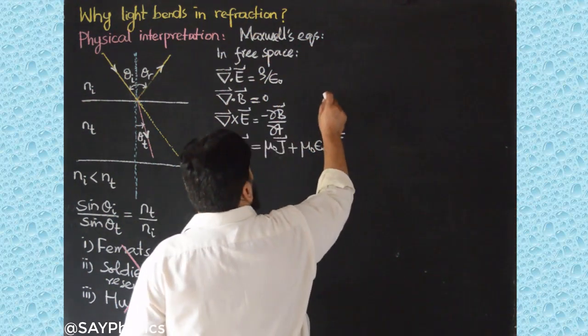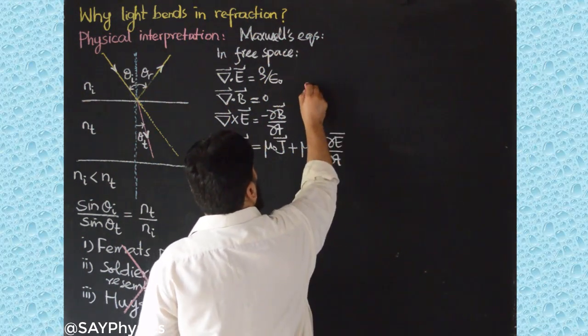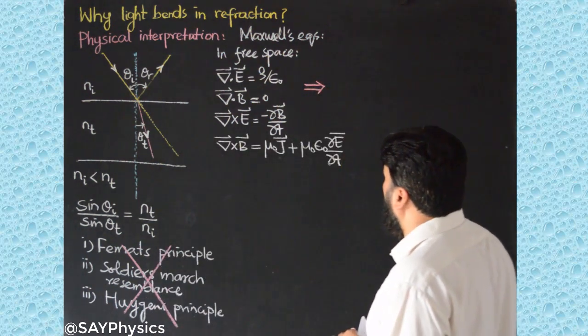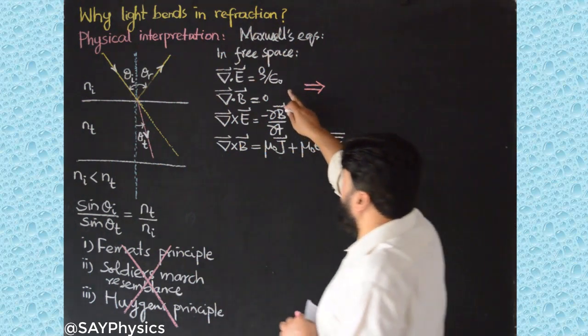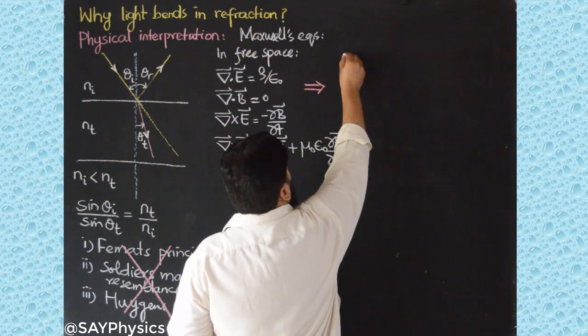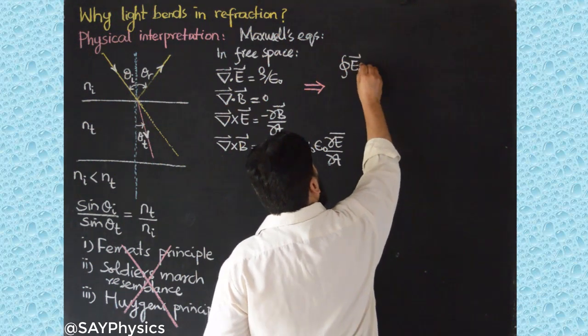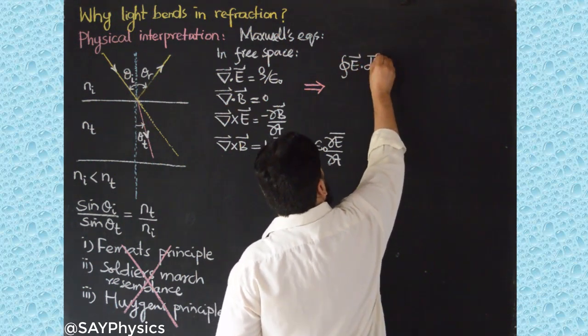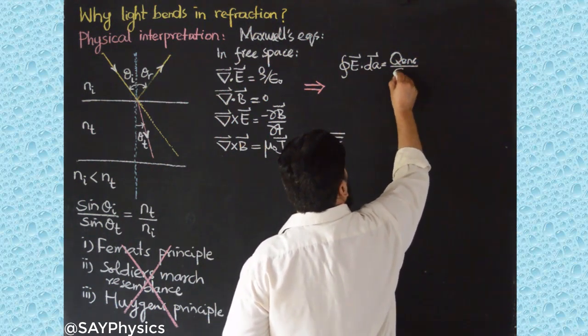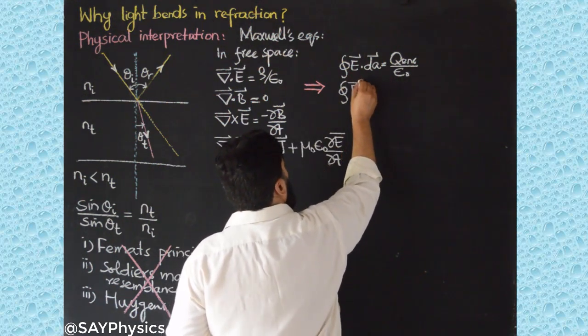Now these equations we can move to integral form with the help of the fundamental laws of electrodynamics like the divergence theorem and the Stokes theorem. I can write the very first one that the closed surface integral, which is the electric flux E dot dA, will be equal to the enclosed charge divided by epsilon_0, and the magnetic flux B dot dA will be equal to zero.